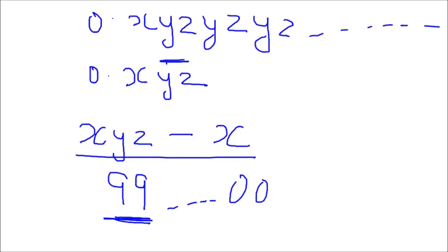For the zeros: the number of digits which have no bar — in this case only x, which is 1 digit — gives the number of zeros. So I will write 1 zero. To summarize: 2 nines because there were 2 repeating digits (yz), followed by 1 zero because there was 1 non-repeating digit (x). This gives the denominator as 990.